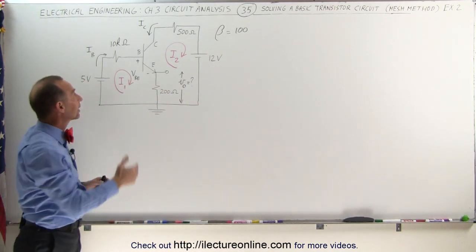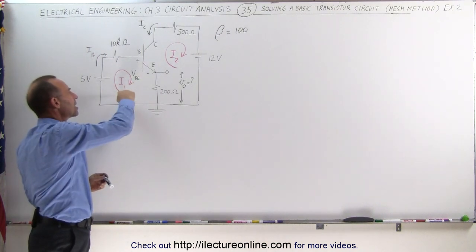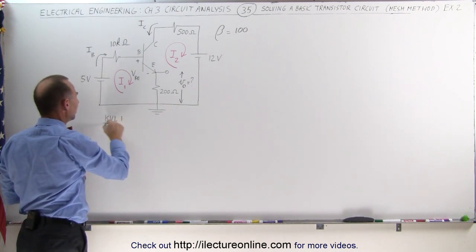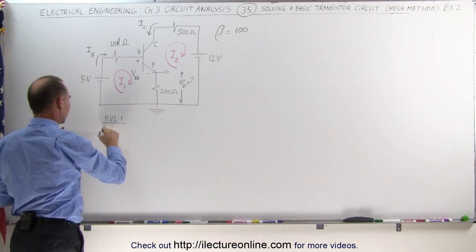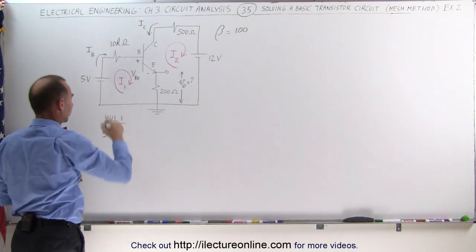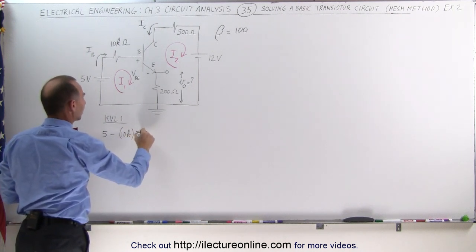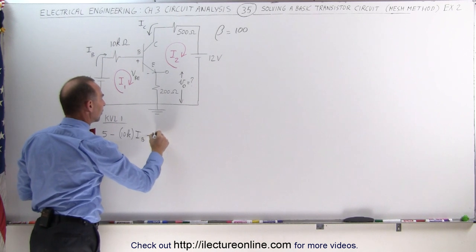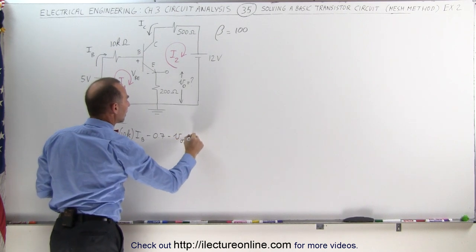That means the ratio between the collector current and the base current is 100 to 1. Let's do our first mesh — KVL, Kirchhoff voltage loop number one — starting from this point going across the 5 volt voltage source. That's plus 5, minus the voltage drop across the 10k resistor, which is 10,000 times I sub B, then minus the voltage drop from B to E which is 0.7 volts, and then the voltage drop V sub O equals 0.